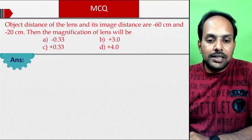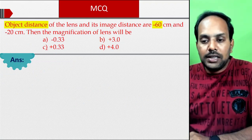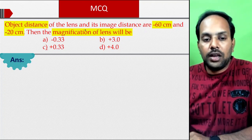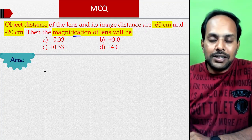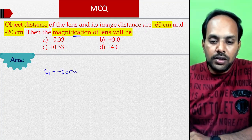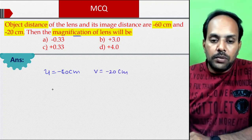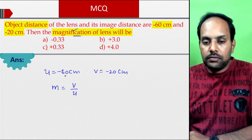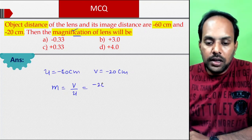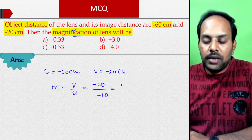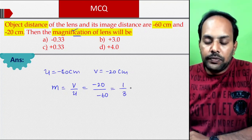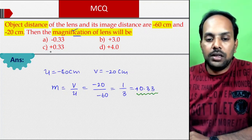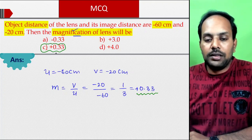Next question: object distance and image distance are minus 60 centimeter and minus 20 centimeter. Find the magnification. Object distance U = −60 cm and V = −20 cm. Magnification M = V/U = (−20)/(−60) = 1/3 = 0.33. The answer is plus 0.33, which is option C.